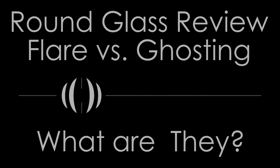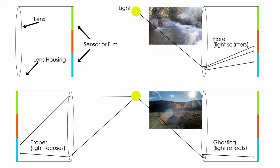In a nutshell, flare and ghosting are undesirable elements of lens performance caused when stray light passes through the lens and to the image media in ways that aren't preferential from a technical standpoint. That means light gets where it shouldn't and messes up your image.